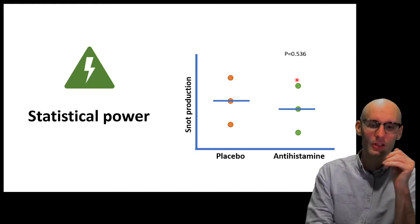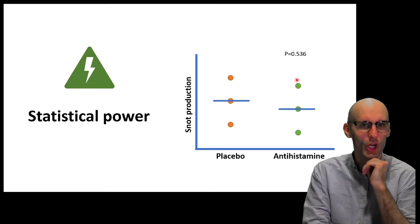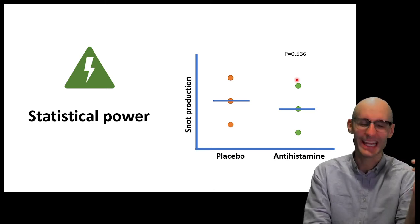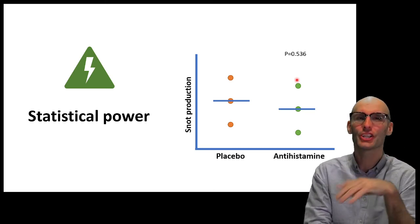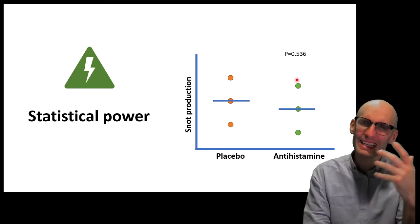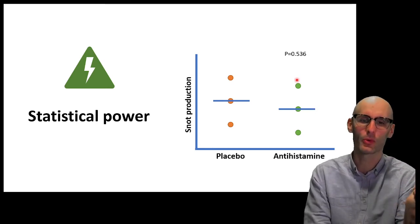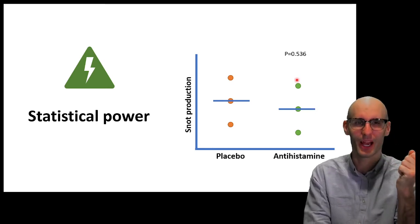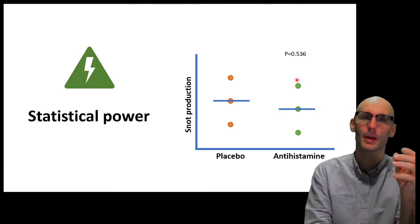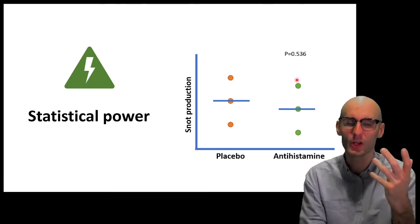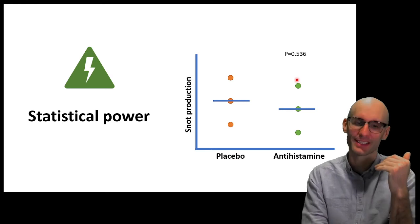Could we then conclude that the antihistamine don't work? Based off an n of 3. I think we intuitively know that we're not really confident in our statistical model with such small n's. With such a small sample number. We're not really confident of it. And that's because there's low statistical power.